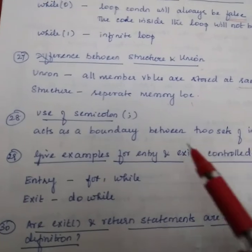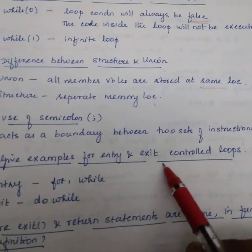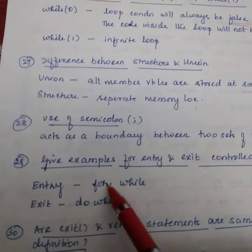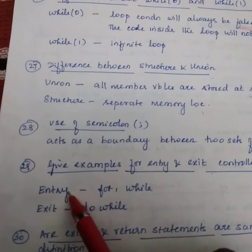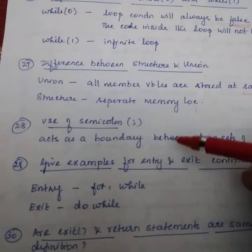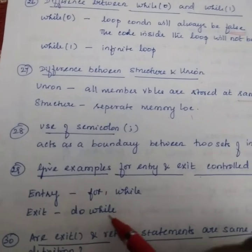Give some examples for entry control loops and exit control loops. For loop, while loop are entry control loops. And exit control loop is do while.